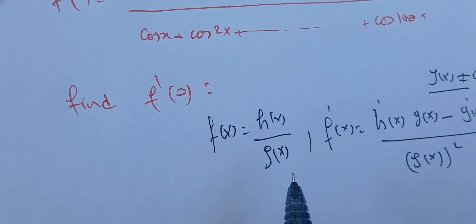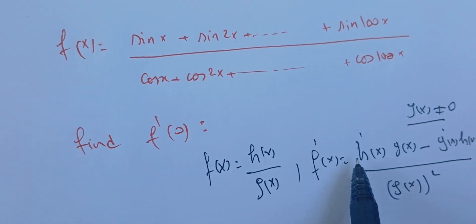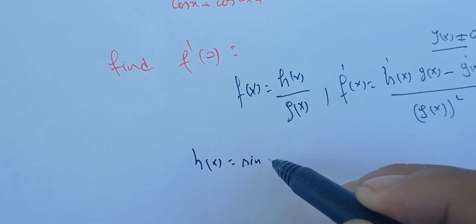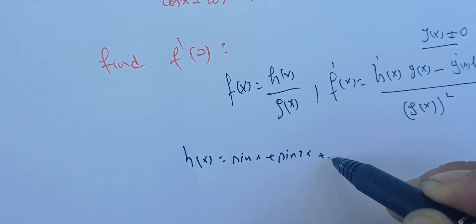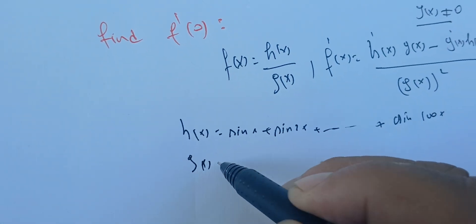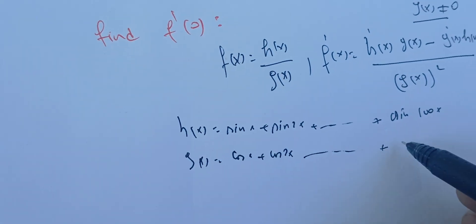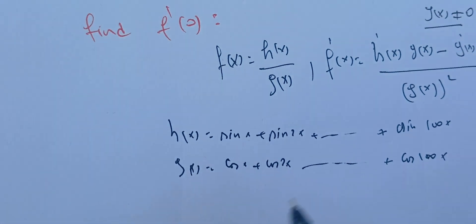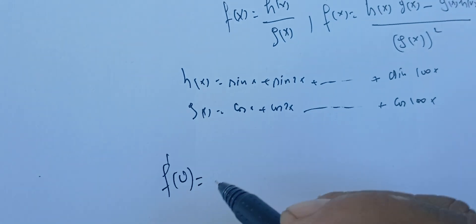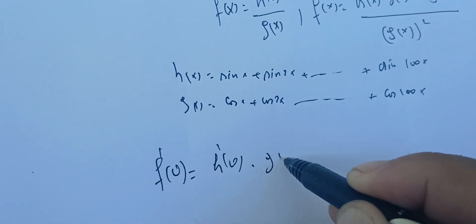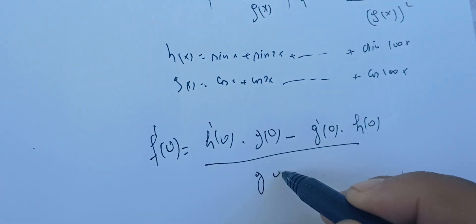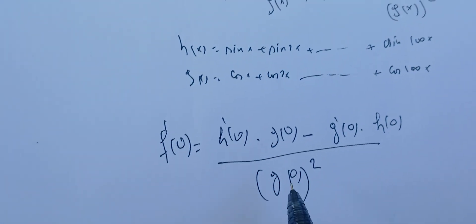So H(x) is sine x plus sine 2x plus ... plus sine 100x, and G(x) is cosine x plus cosine 2x plus ... plus cosine 100x. Plugging in x = 0, f prime of 0 equals H prime of 0 times G(0) minus G prime of 0 times H(0), all over G(0) squared.